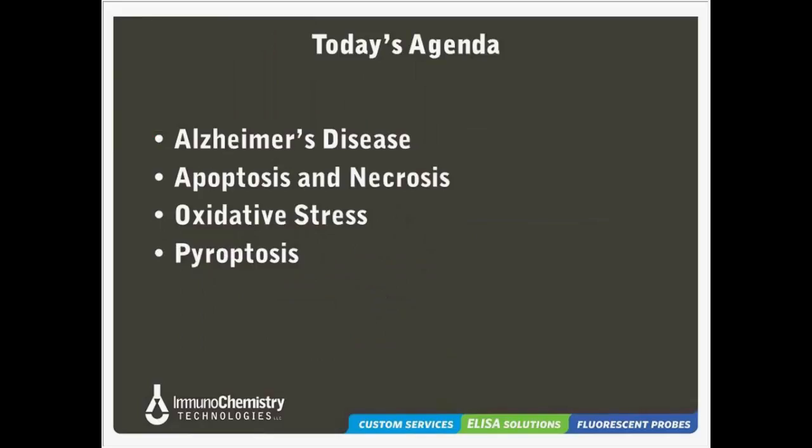Today, we'll first give a little bit of background on Alzheimer's disease, discuss the difference between apoptosis and necrosis pathways and how they play a role in Alzheimer's, explore the role of oxidative stress, and finally discuss pyroptosis and how it impacts neuronal diseases. As we work through these main topics, we'll also discuss the related detection kits offered by ICT and look at some example data.